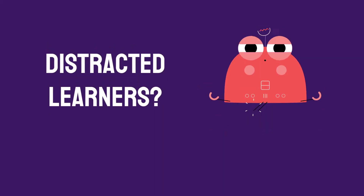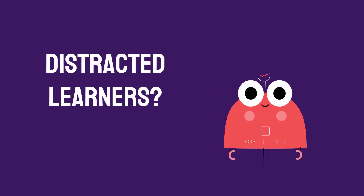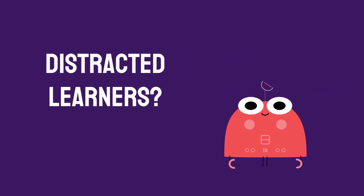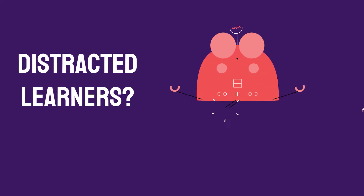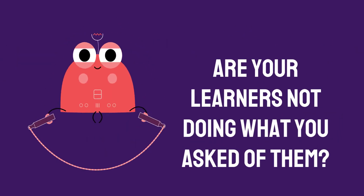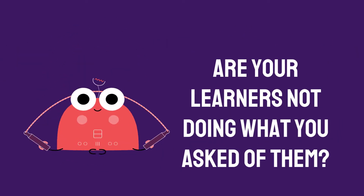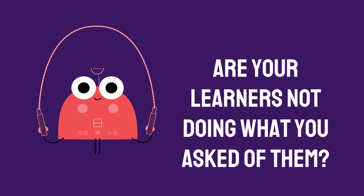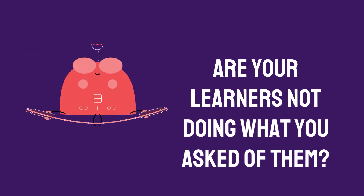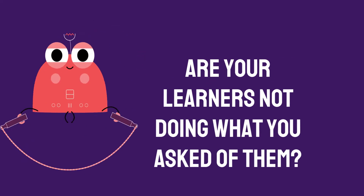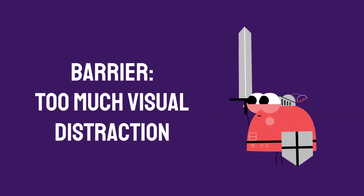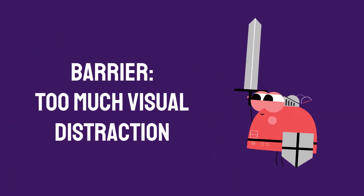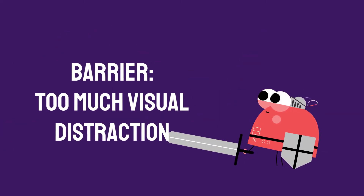Have you ever noticed your learner seeming distracted during instruction? You might assign a task and your learners are clearly not paying attention because they are looking around at other stuff. Let's call this barrier too much visual distraction.